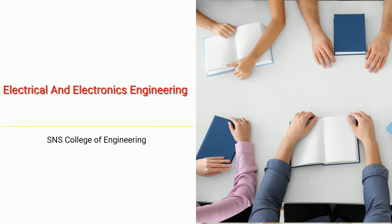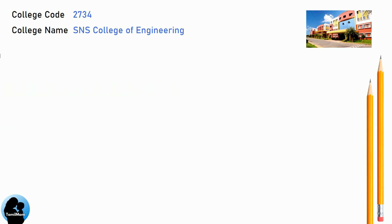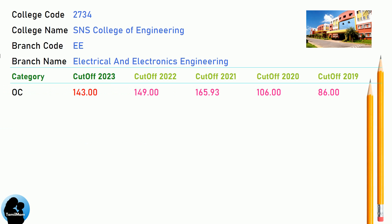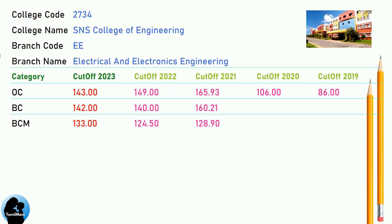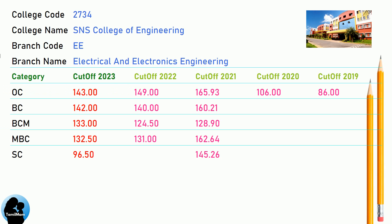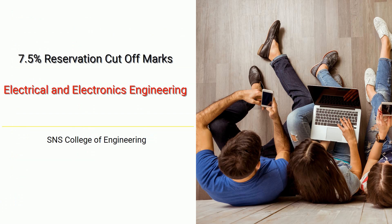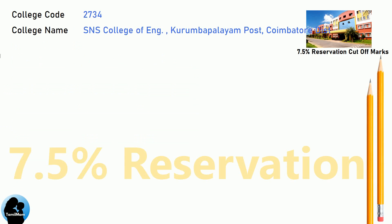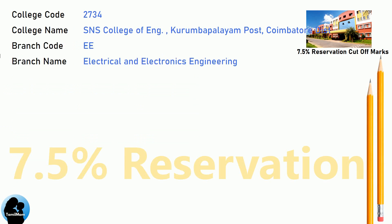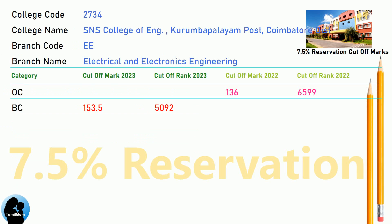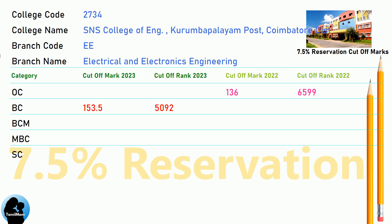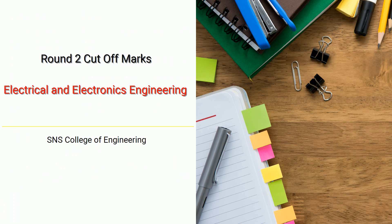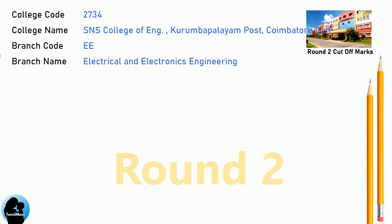DNA Cut-off for ASNS College of Engineering in Electrical and Electronics Engineering. DNA 7.5 Reservation Cut-off for ASNS College of Engineering in Electrical and Electronics Engineering. DNA Round 1 Cut-off for ASNS College of Engineering in Electrical and Electronics Engineering.